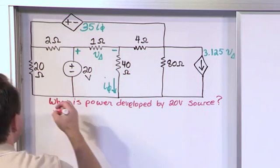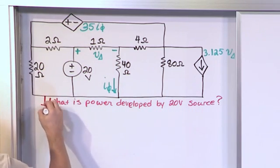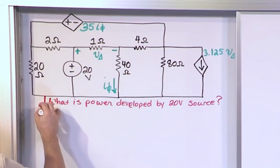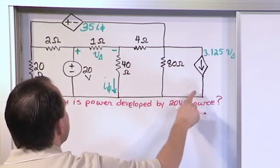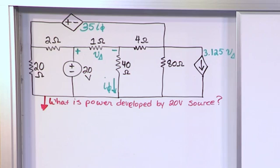Since I have a bunch of text here, I'm just going to put the reference node down here by this little symbol down here. That means this is the common node with which all of our node voltages will be referenced.